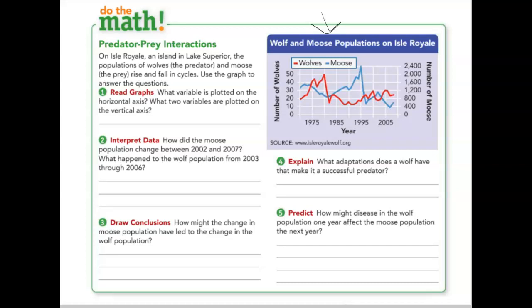The horizontal axis shows the year. The vertical axis actually has two variables — one for the number of wolves and one for the number of moose. And the plural and singular form of moose is the same — it's just moose.